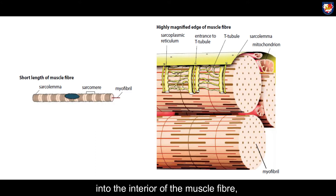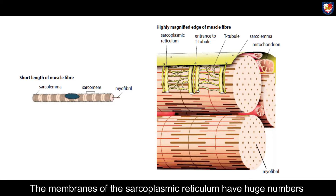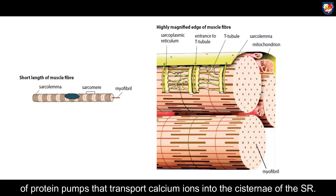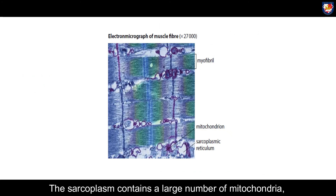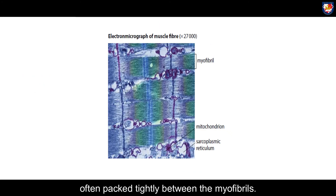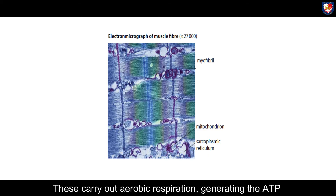The cell surface membrane has many deep infoldings into the interior of the muscle fiber called transverse tubules, or T-tubules for short. The membranes of the sarcoplasmic reticulum have huge numbers of protein pumps that transport calcium ions into the center of the SR. The sarcoplasm contains a large number of mitochondria, often packed tightly between the myofibrils, which carry out aerobic respiration generating the ATP required for muscle contraction.